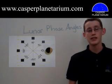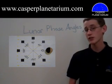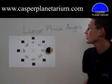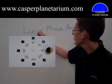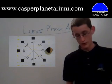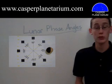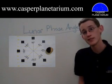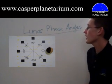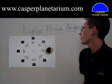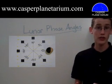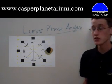Hello everyone. Ian's on vacation, so I'll be flying solo today. For this video, I'm going to talk about lunar phase angles. If you visit our video on the lunar phases, you can see what causes each phase of the moon. But a lunar phase angle is essentially just what angle the moon has to be at in its orbit around the Earth for that phase of the moon to occur.